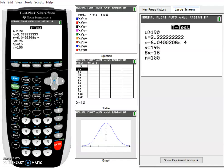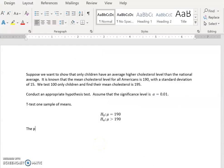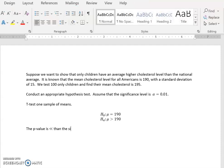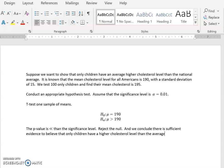What can we conclude from our calculation? The p-value is much less than the significance level. Even with the significance level as low as 0.01, we still reject the null and conclude there is sufficient evidence to believe that only children have a higher cholesterol level than the average American.